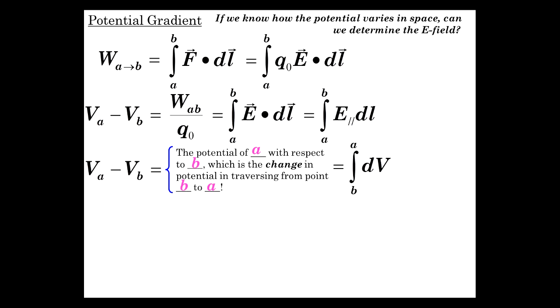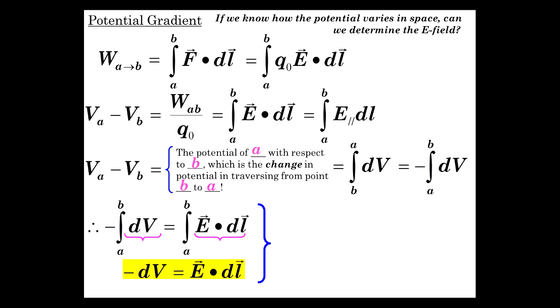So that's equal to the integral from B to A of the way in which the potential changes, integral from B to A of dV, which is minus the integral from A to B of dV. So minus the integral from A to B of dV equals integral from A to B of E dot dL. So minus dV equals E dot dL. If you look at these, we have the limits being the same, A to B.